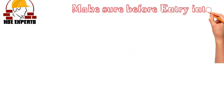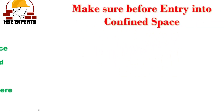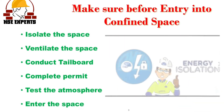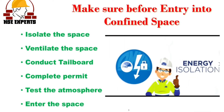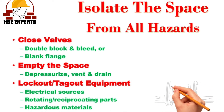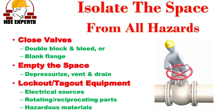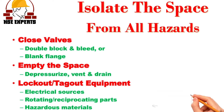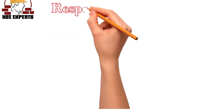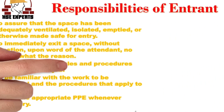Barricade the area with a warning sign board. Make sure before entry into the confined space to: isolate the confined space, ventilate the confined space, complete the permit requirements, test the inside confined space atmosphere, then enter. The space must be isolated from all hazards. Close the valves using double block and bleed or blank flange. Empty the space, depressurize, vent or drain, and apply lockout/tagout on electrical sources, rotating and reciprocating parts, and hazardous materials.